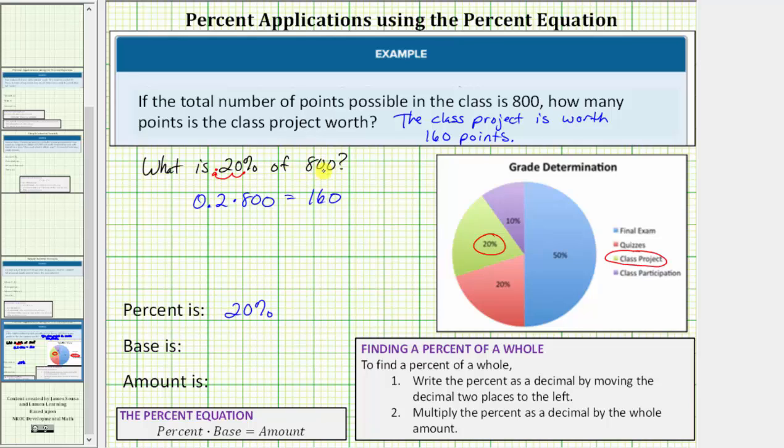800 is the whole amount, and therefore 800 is the base. The unknown is the part of the 800, or part of the whole, which would be the amount.